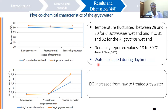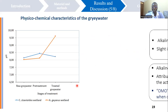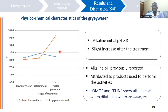The preliminary results show that the temperature fluctuated between 29 and 32 degrees Celsius. The generally reported values are between 18 and 30 degrees Celsius. The high values reported in our study can be explained by the fact that the water was collected during the daytime. During the treatment, the dissolved oxygen increased from the entrance to the outlet of the system. The pH value was alkaline, higher than 8, and it slightly increased during the treatment.